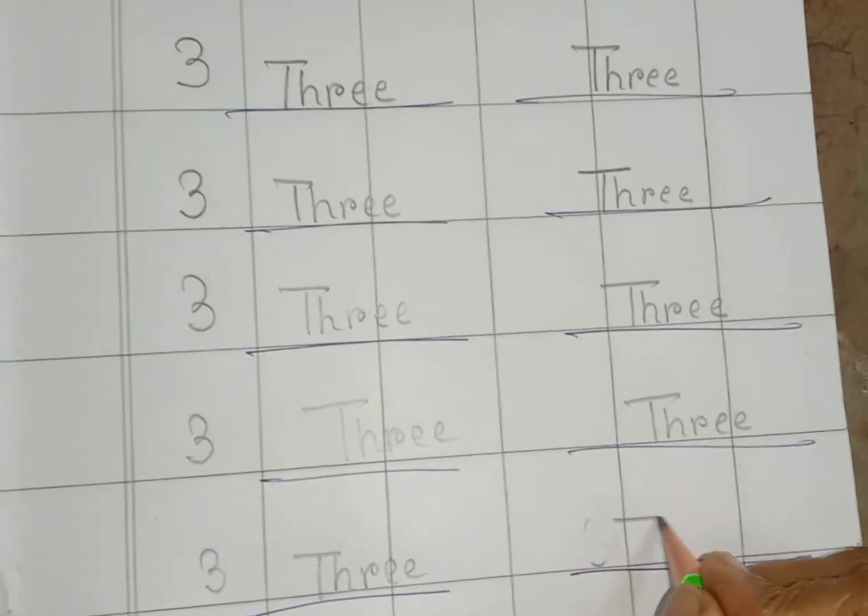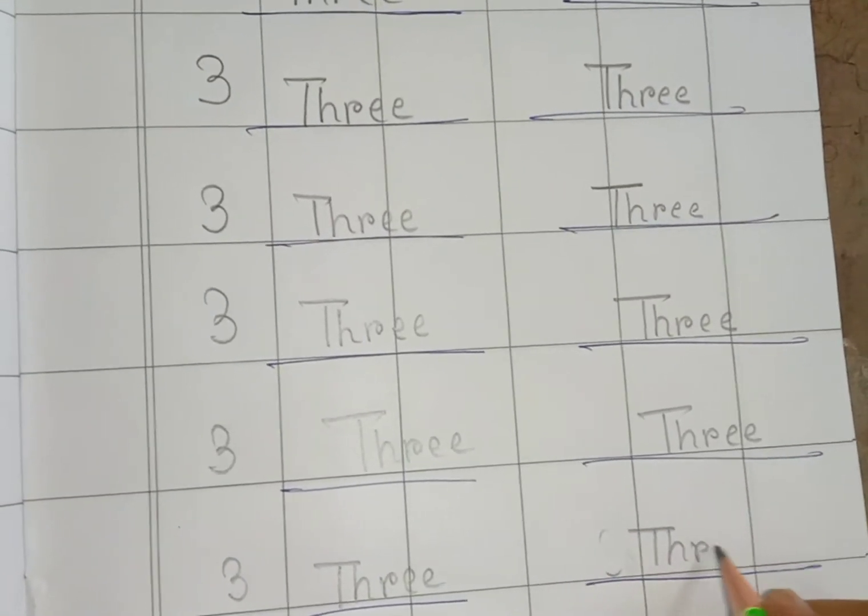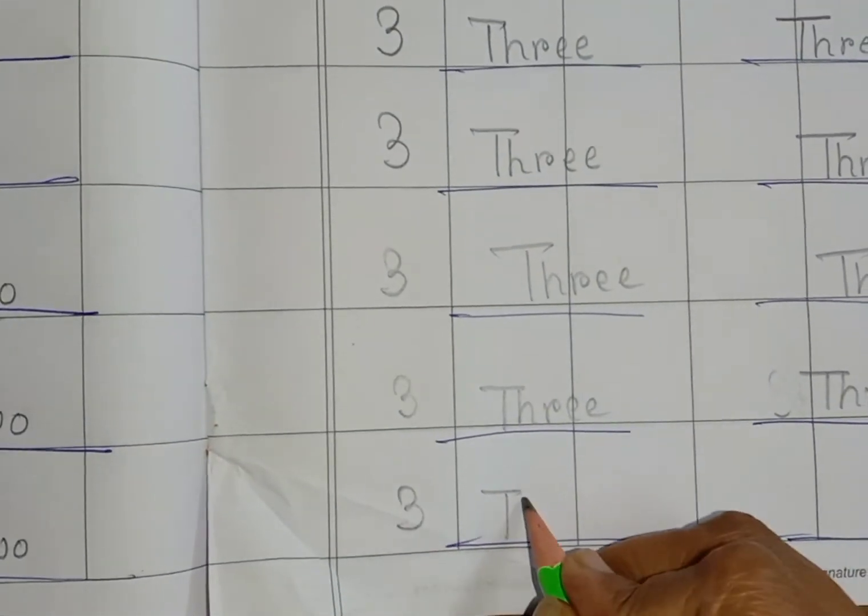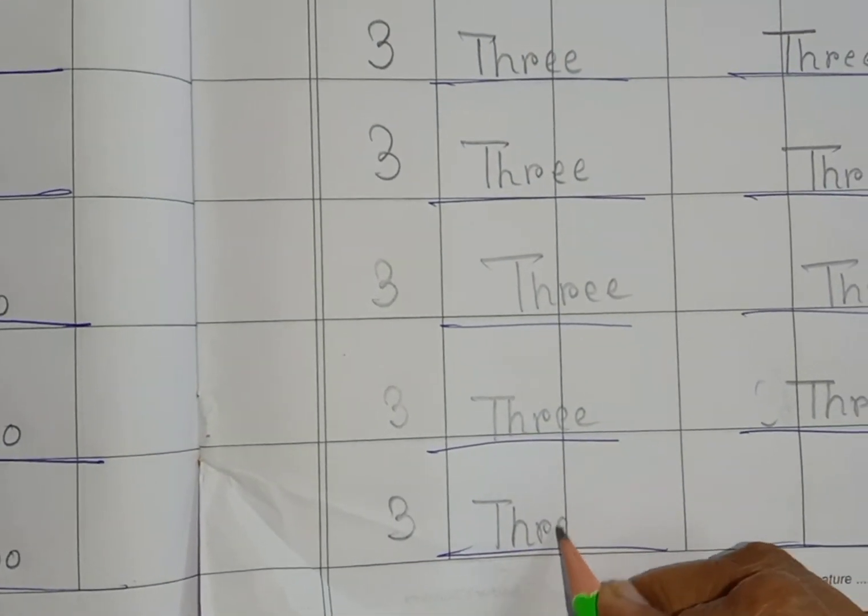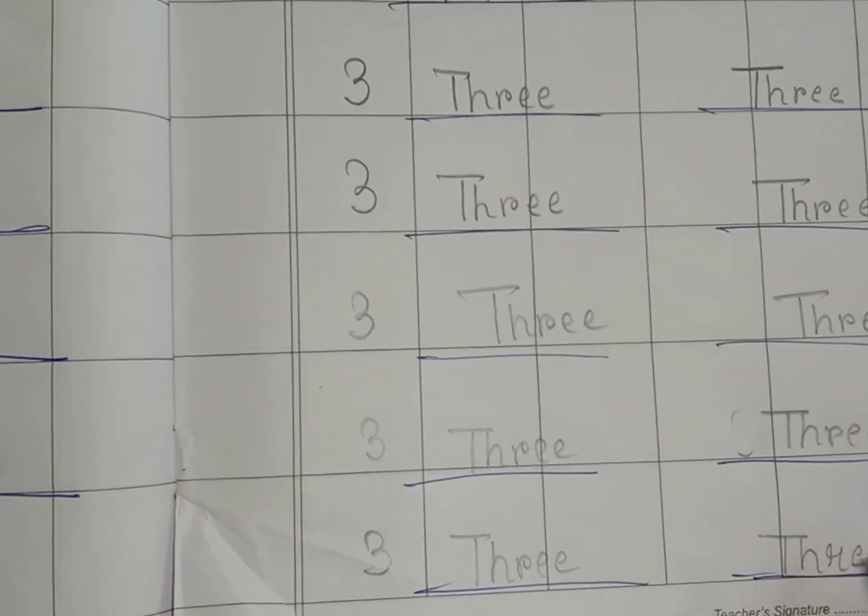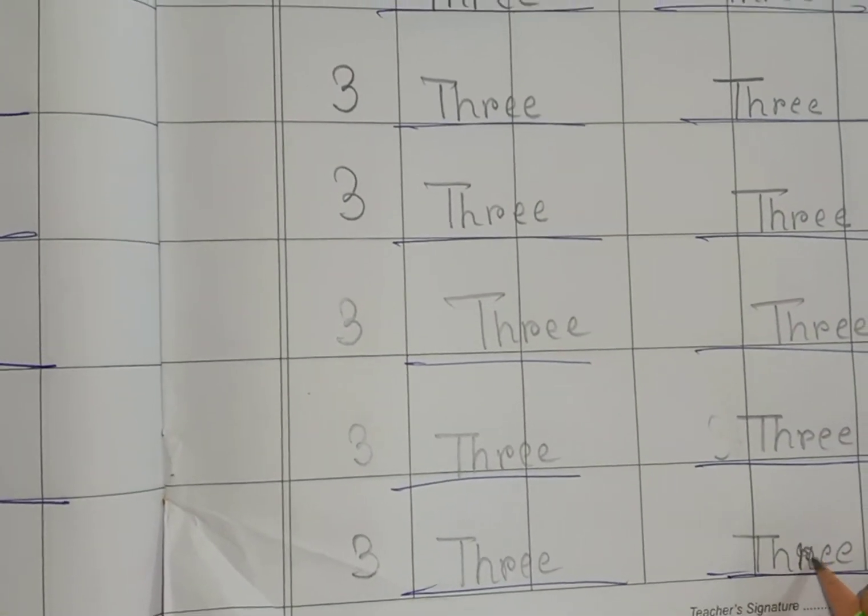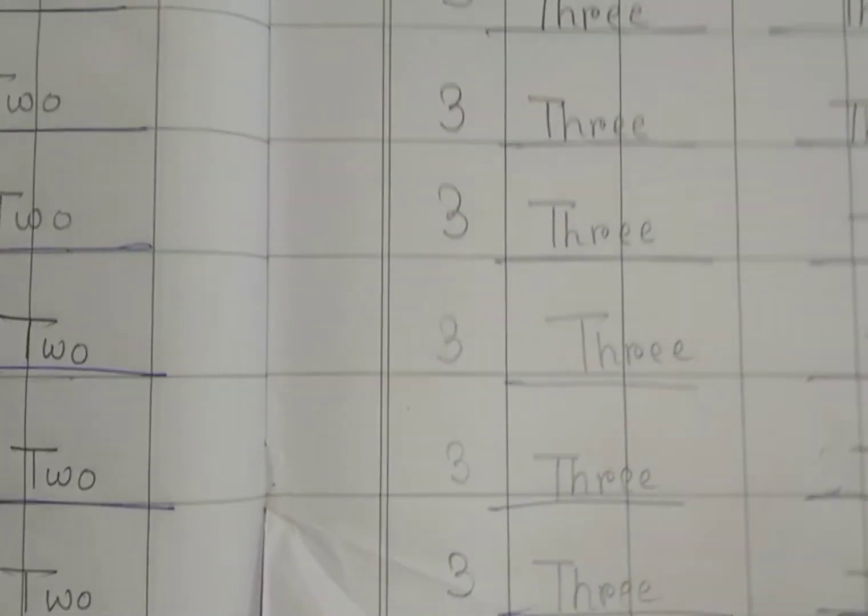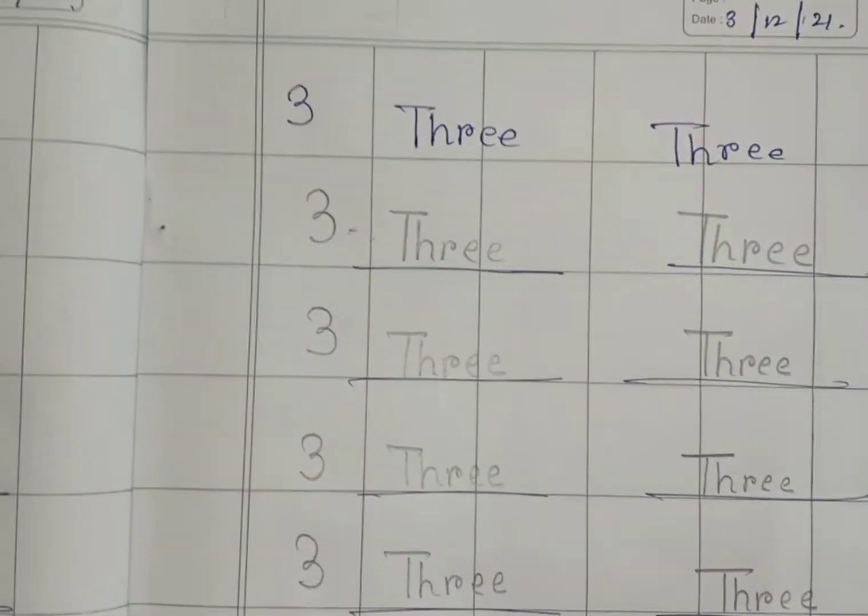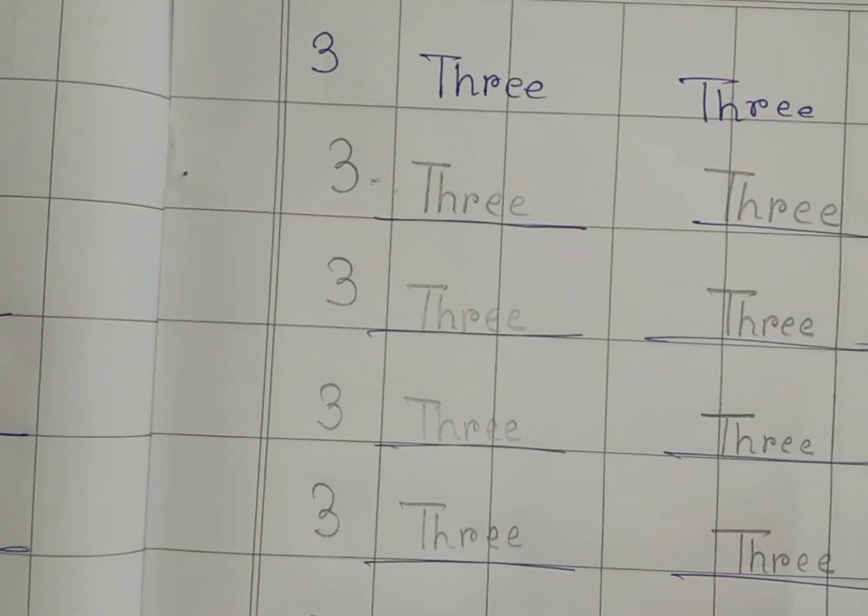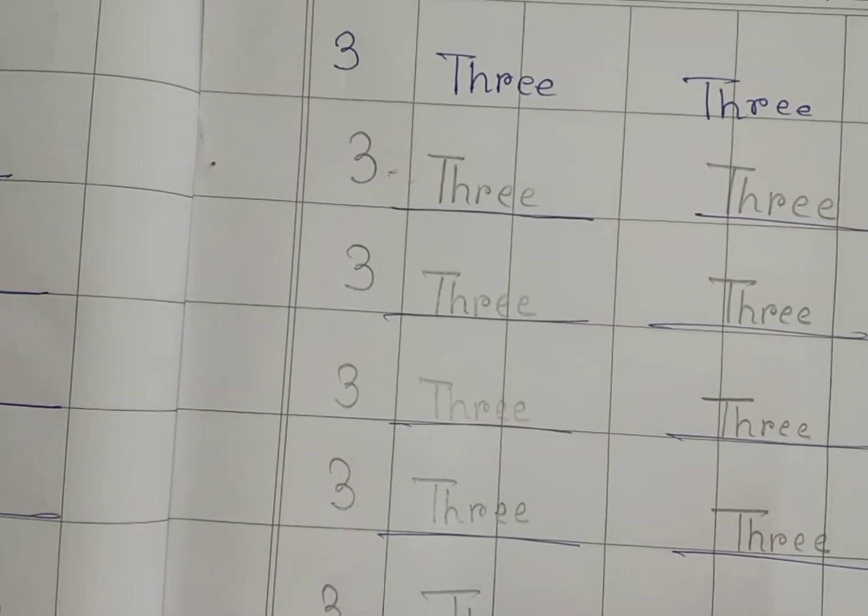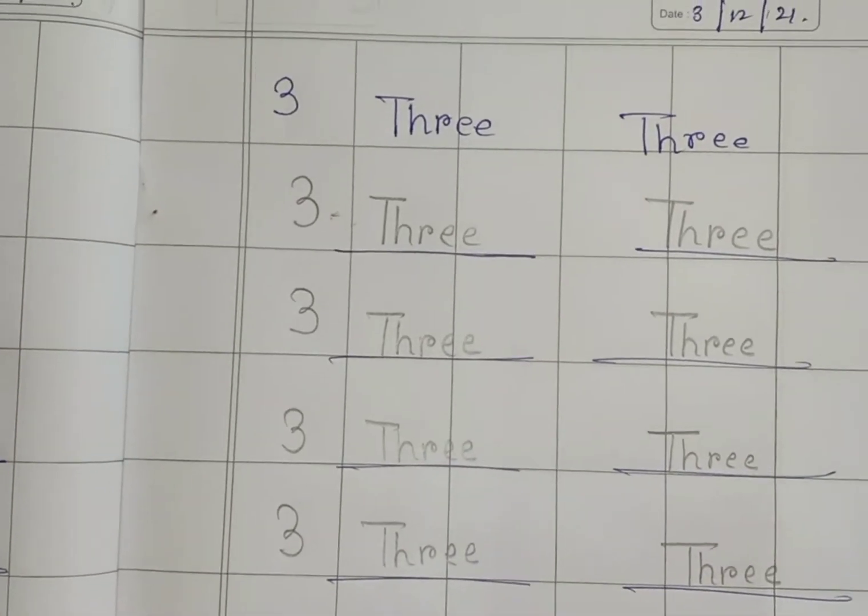Right. Sorry. T-H-R-W-E-3. Again write. T-H-R-W-E-3. Both are right so children I have finished. I hope you have learned the spelling of three. So no more for today. Thank you for watching this video. Bye bye children, have a nice day.